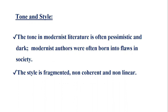If we talk about the tone and style of modernist writers, the tone in modernist literature is often pessimistic and dark. Modernist authors were often born into flaws in society. The style is fragmented, non-coherent, and non-linear. You have this sense of despair and darkness — these writers are pessimistic in approach, not very positive, hopeful, or energetic. Rather, you perceive a kind of sadness when you read their writing.